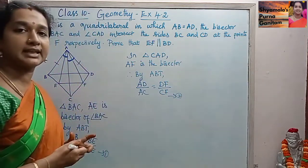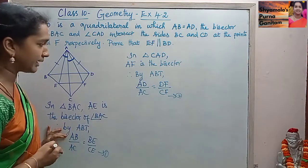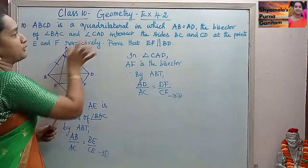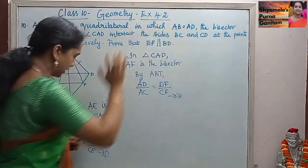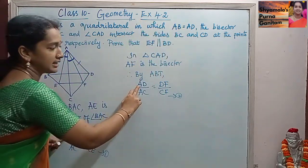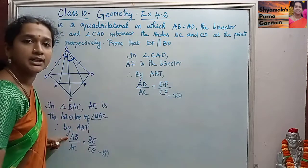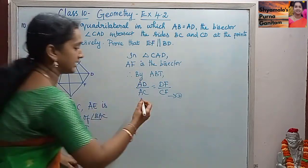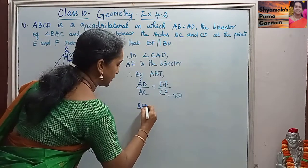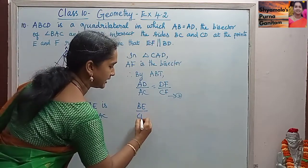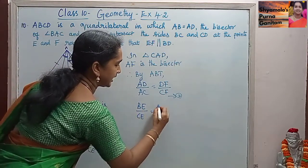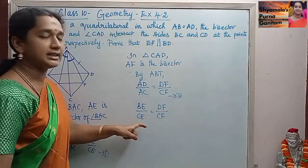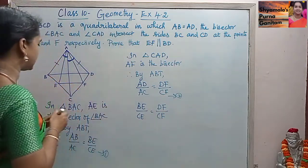When we compare the first and second equations: the first has AB by AC, and the second has AD by AC. Since in the question it is given that AB is equal to AD, the LHS numerators are the same. So we can say the RHS is also equal — that is, BE by CE is equal to DF by CF.